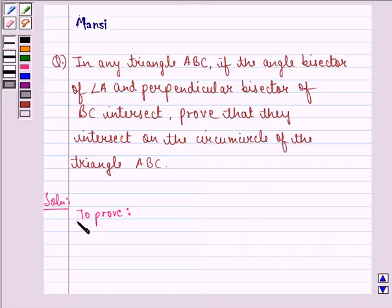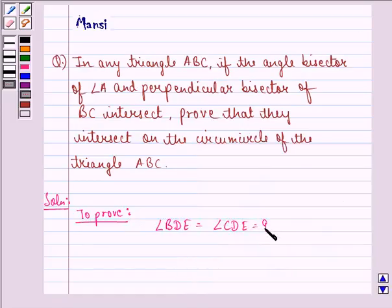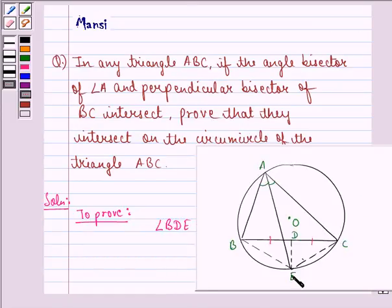So we have to prove that angle BDE is equal to angle CDE, which is equal to 90 degrees. First of all, we do some construction. We join B to E and C to E.